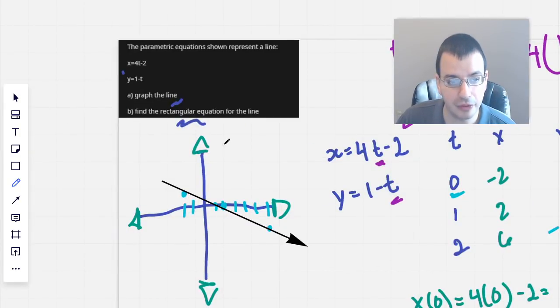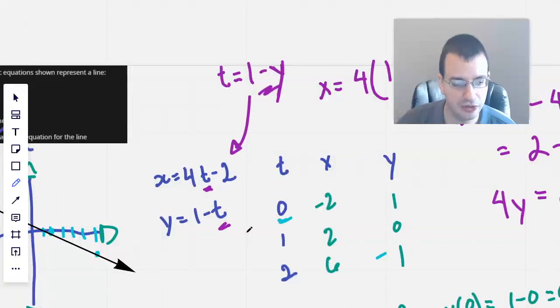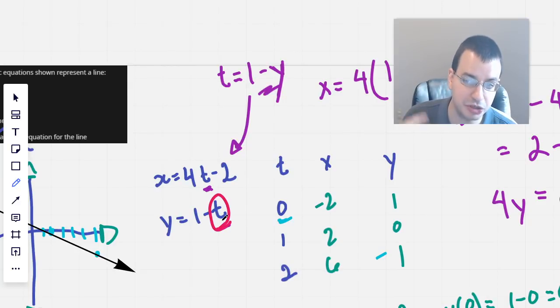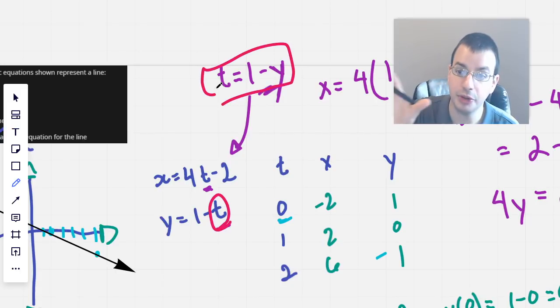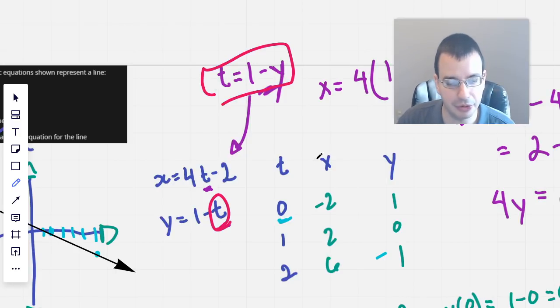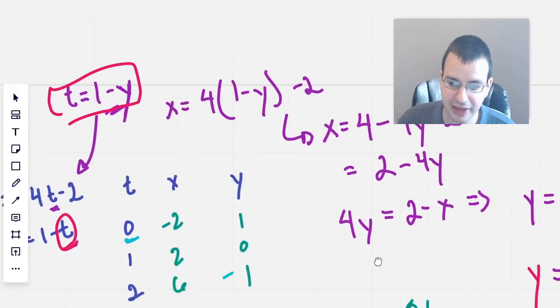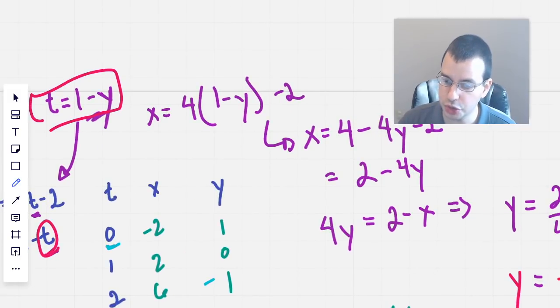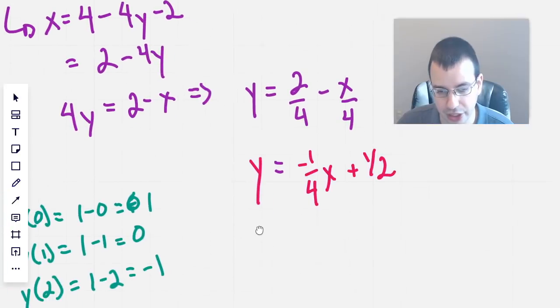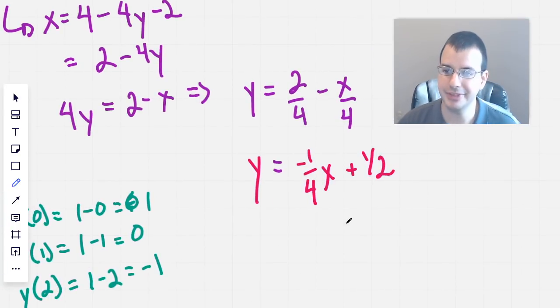To create a rectangular equation for this, we solved for the parametric variable. In this case, it was t, and we took that variable that we solved for, and we plugged it back into the other equation. Therefore, we were able to reduce that equation to just x and y's, and t was completely eliminated. That gave us our rectangular equation, which we then put into y-intercept form. Hope that helped. See you next time.